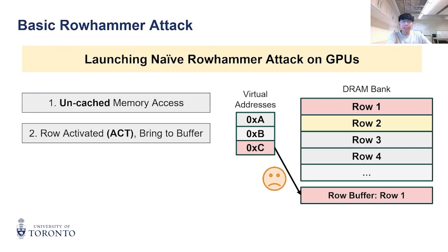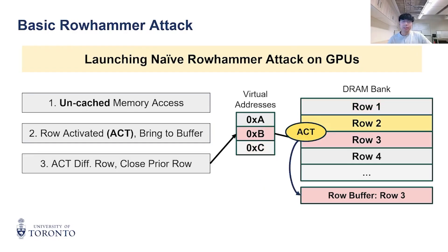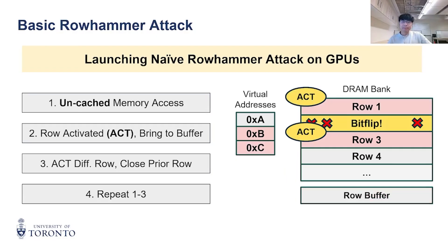But the Row Buffer is a problem, as it functions similarly to a cache, meaning subsequent accesses to Row 1 go to the buffer and do not need ACTs. Thus, in order to keep triggering ACT commands, we need a way to evict rows from this buffer. We can do this by accessing another row, forcing the buffer to evict.